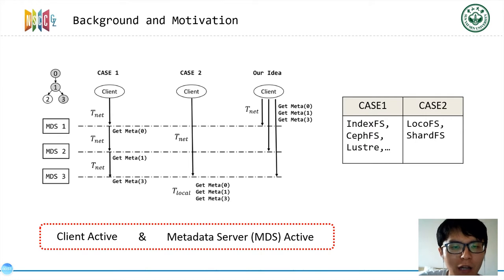In case 1, the client needs to communicate with the metadata server to resolve each layer of the requested path. This way makes the metadata server easy to scale. Many widely used file systems like Lustre, CephFS, BeeGFS, and CFS use this design. However, these systems need to access metadata servers multiple times during path resolution, which brings a lot of network I/O.